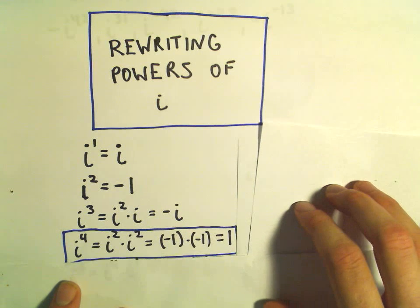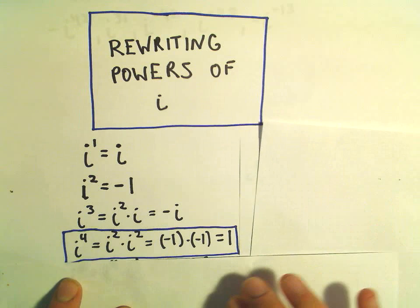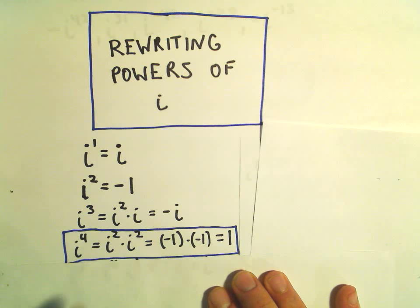i to the fourth, this is going to be one of the ones that I use that's important. So i to the fourth, we can write that as i squared times i squared. But that's just negative 1 times negative 1, and that gives me positive 1.